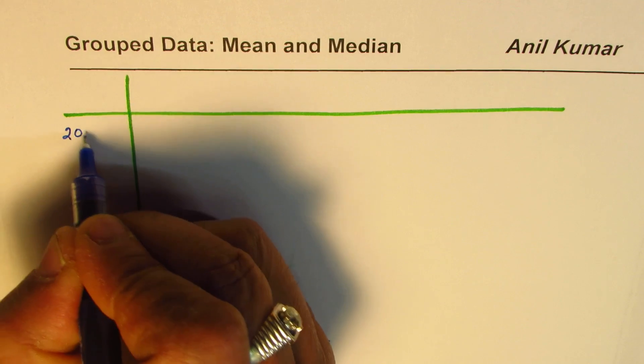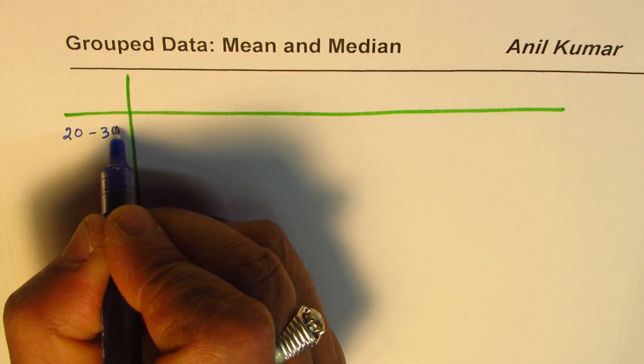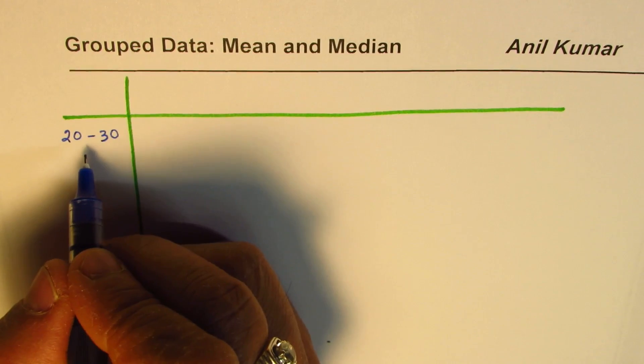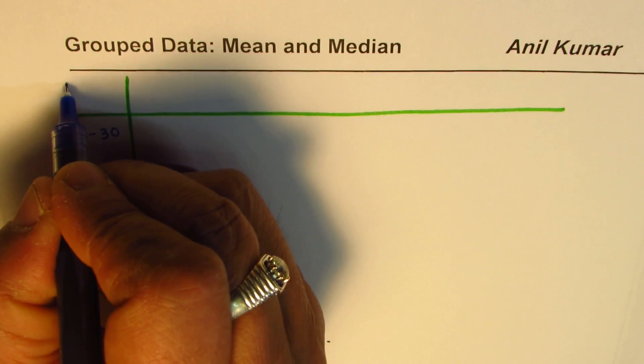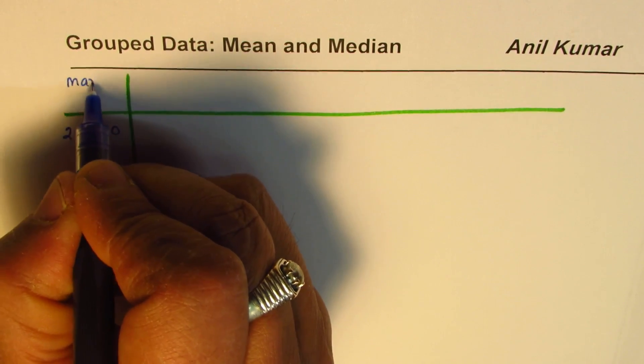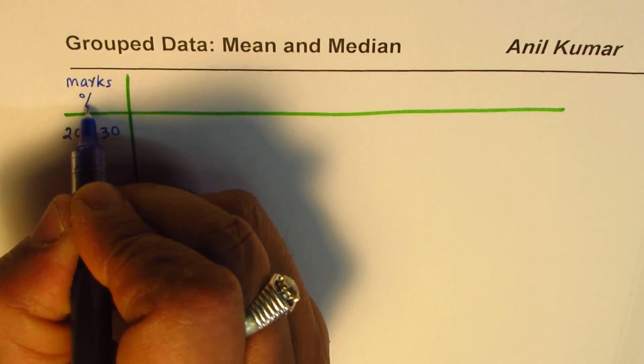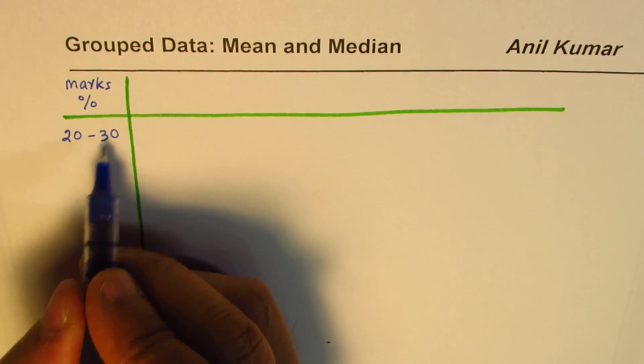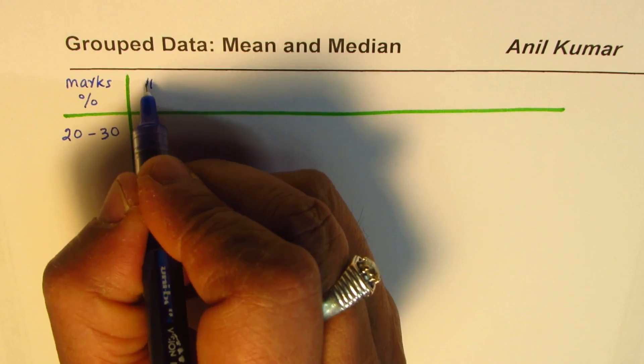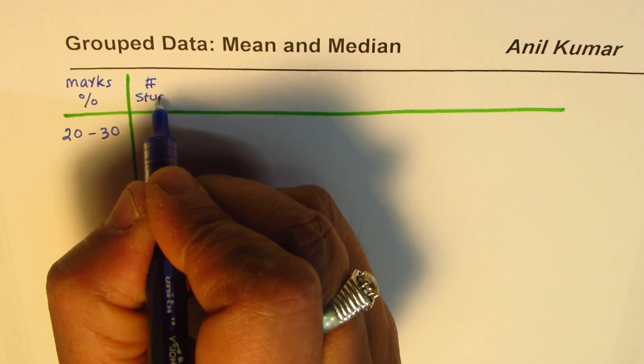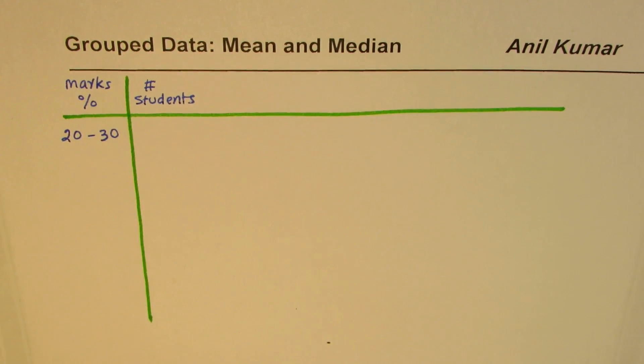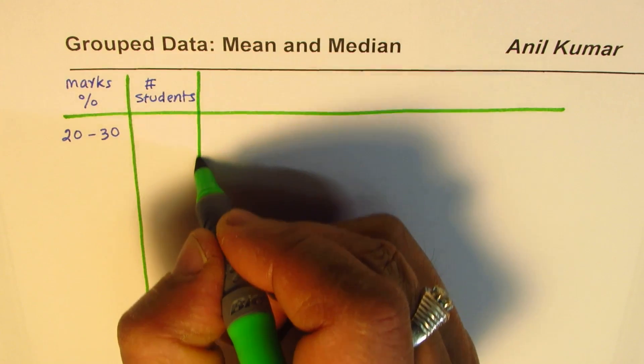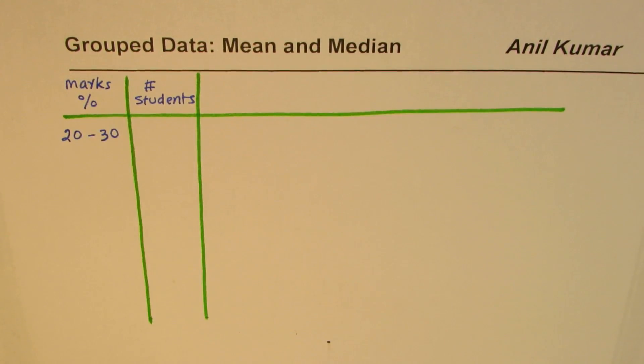Let's say the students whose percent marks are between 20 to 30 percent - this is a range for the percent marks. So from 20 to 30, let us find the number of students. Between this group there were five students who scored between 20 to 30.